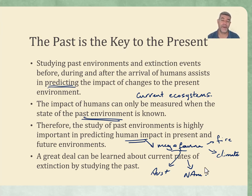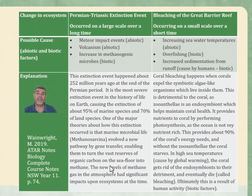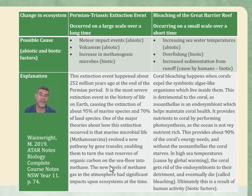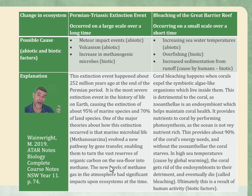One of the things we're wanting to do is learn about current rates of change, possible extinction events into the future, and the impact of human activity — and the best way to do that is by looking at the past. Here's a nice summary table from the ATAR course notes — a good resource if you want to do some summarizing. It shows short-term and long-term impacts of change in ecosystems side by side, giving you an idea of the differences we can see when looking at change in past environments.